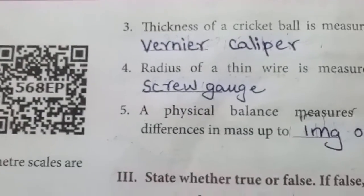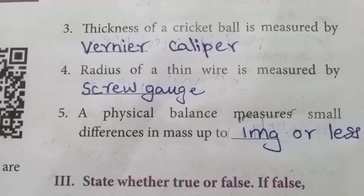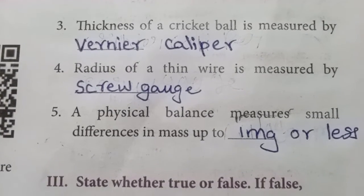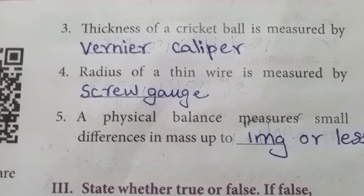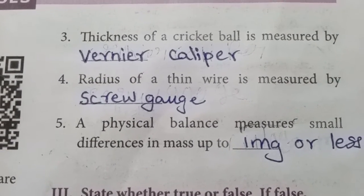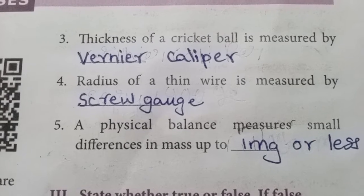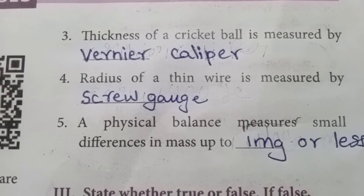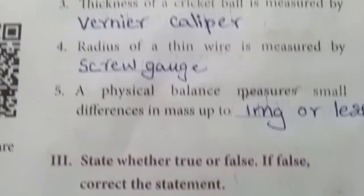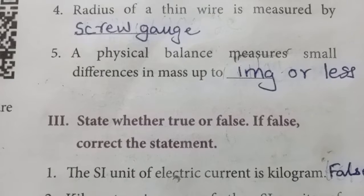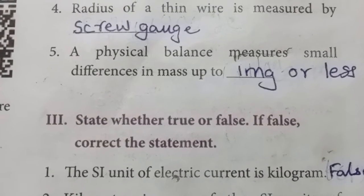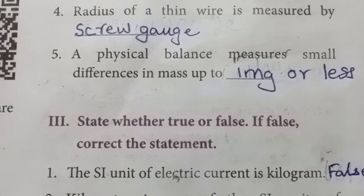The thickness of a cricket ball is measured by vernier caliper. The radius of a thin wire is measured by screw gauge. A physical balance measures small differences in mass up to one milligram or less.